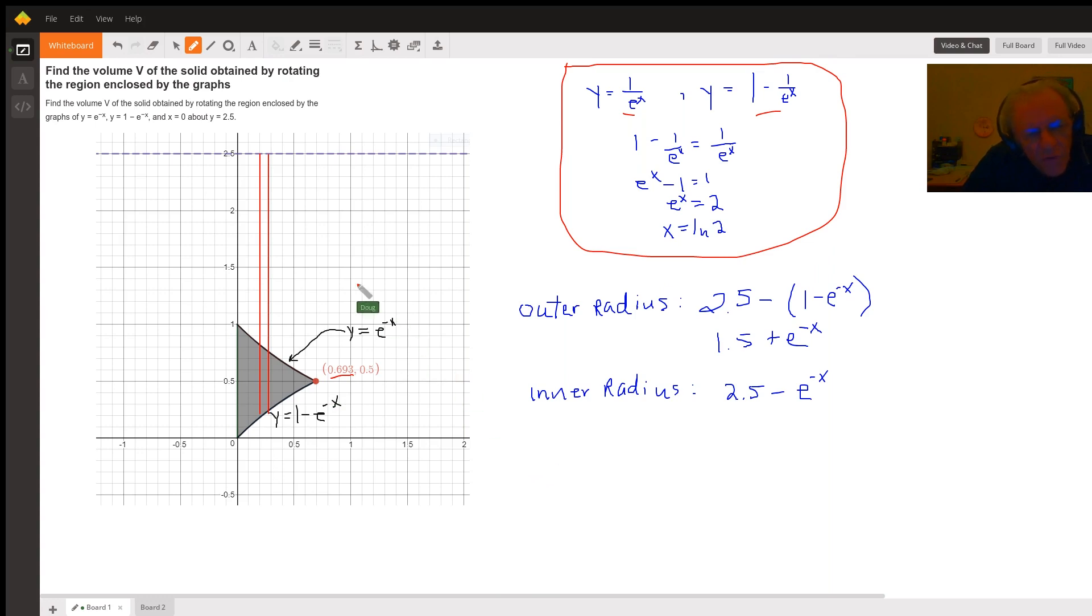And so I've drawn a typical washer right here, perpendicular to the axis of revolution. We're going to use the idea of outer radius squared minus inner radius squared. So the expression to represent the outer radius would be this distance right here. But that distance, for any particular x in the interval from 0 to the natural log of 2, is going to be 2.5 take away this distance.